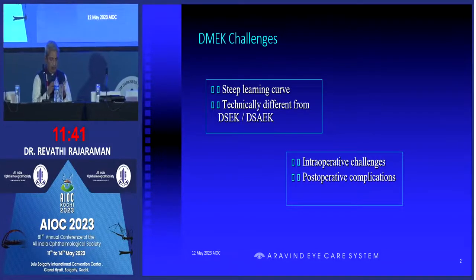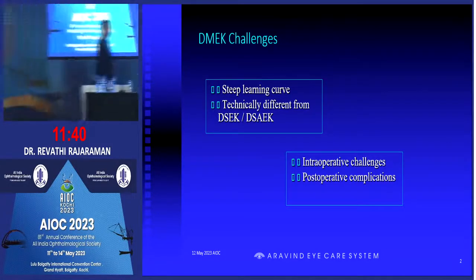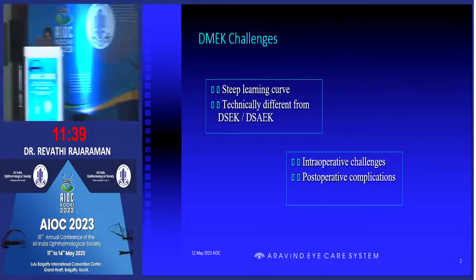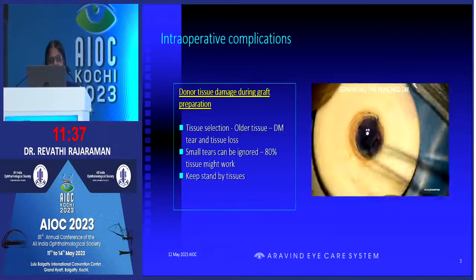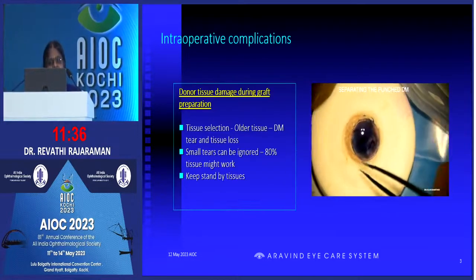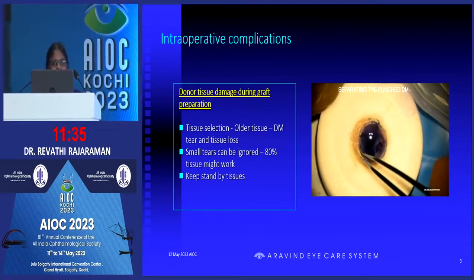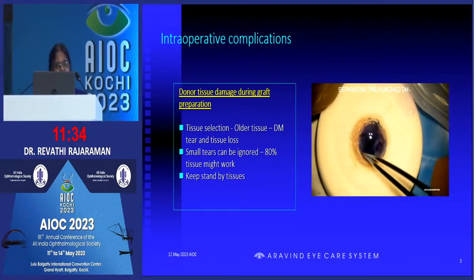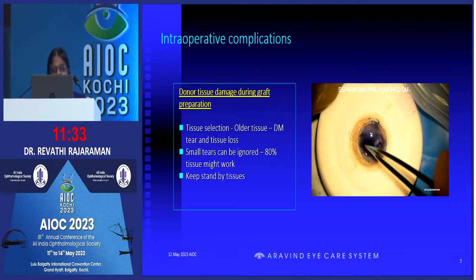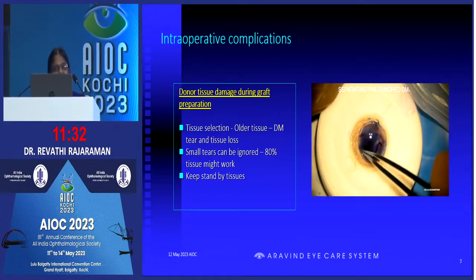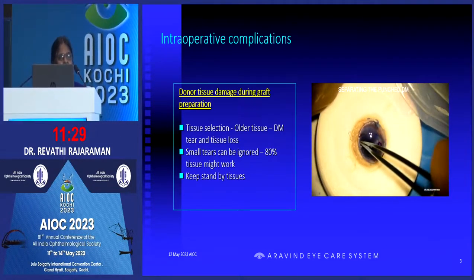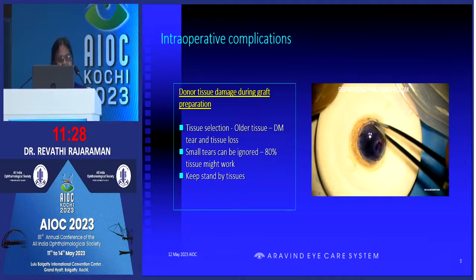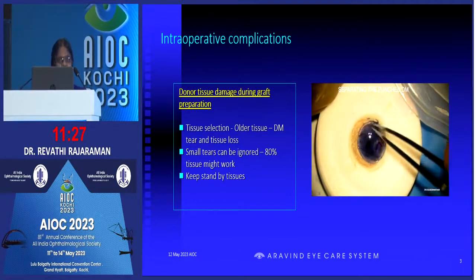The next few minutes we will see some of the problems one may face during the learning curve. The first one is while preparing the tissue. Generally we try to go for a little older tissue so that unscrolling will be easier for us in the learning time.